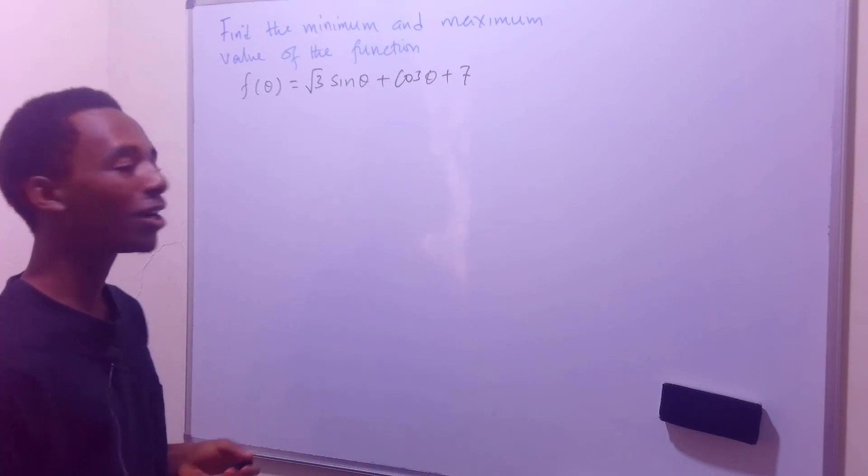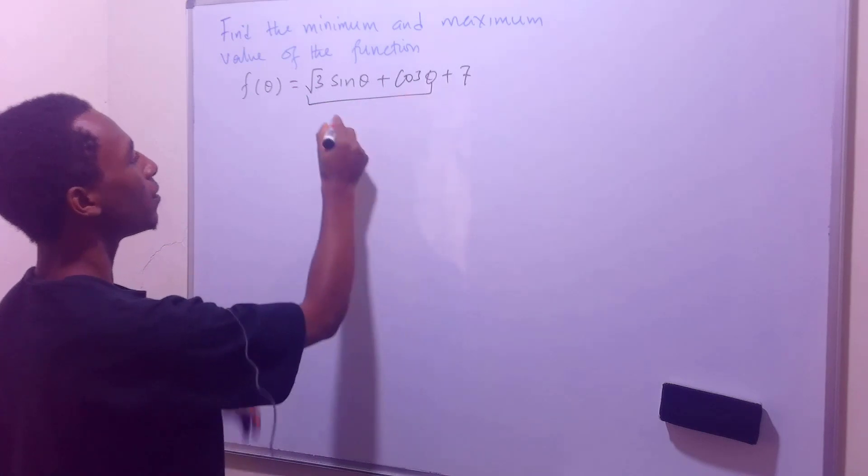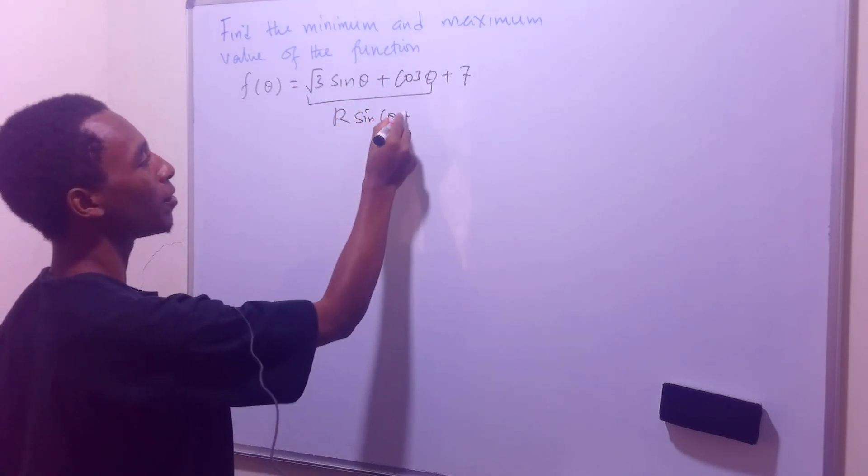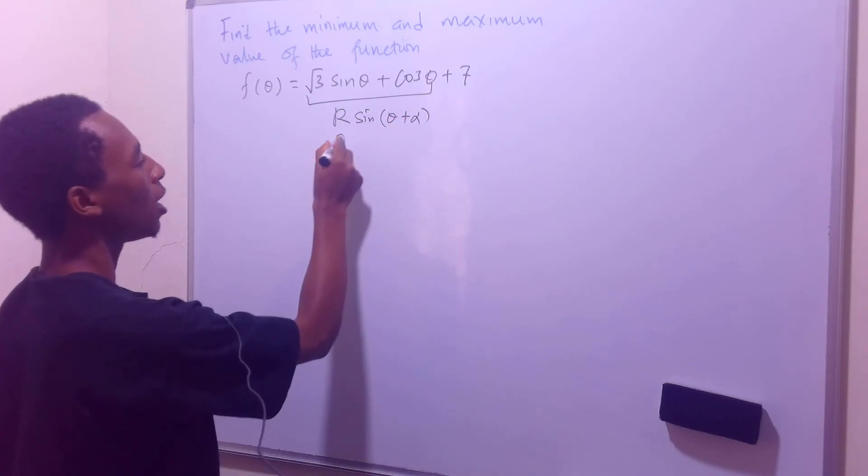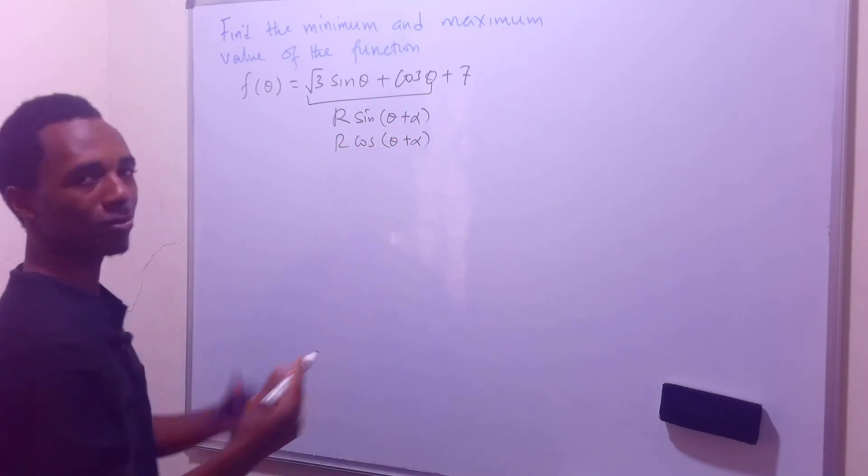It could be a sine or a cosine, and I'll do that by using the compound angle formula. So I'm going to express this part here in form of r sin(θ + α), or I could actually use cos(θ + α), whichever I want.